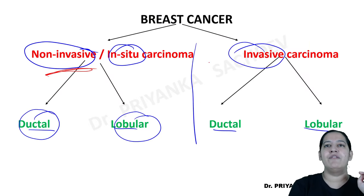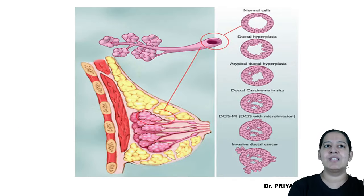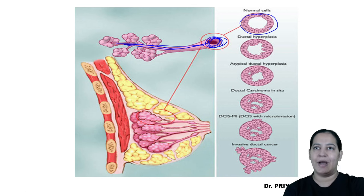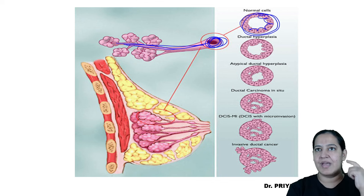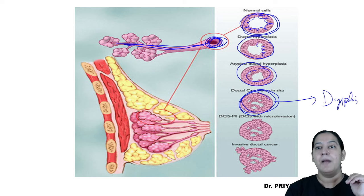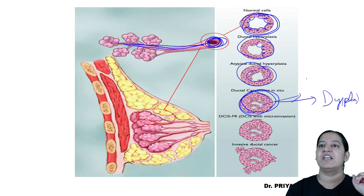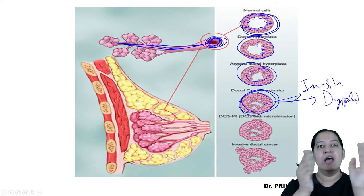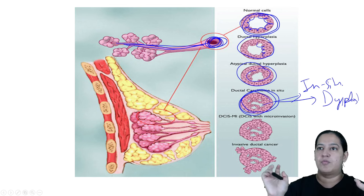Now let me explain the meaning of non-invasive and invasive. Non-invasive is also known as in-situ. This is one duct. First, the epithelial cells undergo hyperplasia — the cells become multilayered, then dysplastic. These dysplastic cells fill the lumen of the duct but are not coming out. They are present within the cavity. So it is known as non-invasive or in-situ — tumor cells are within the lumen of the duct, not breaching and coming out into the stroma.